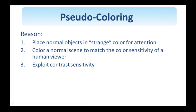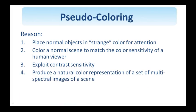We also want to exploit the contrast sensitivity of the eye to changes in blue light, so we map normal colors of objects with fine details into shades of blue. Additionally, we want to produce natural color representations of multispectral images of a scene, including images obtained by sensors whose response is outside the visible wavelength range, such as infrared and ultraviolet.